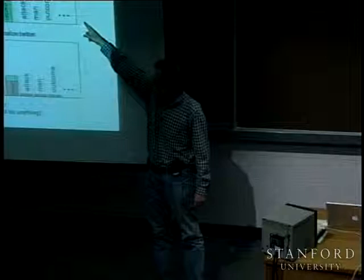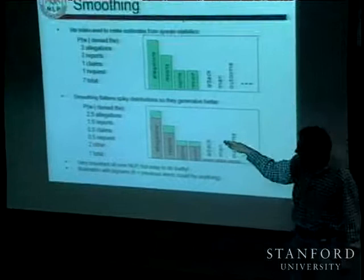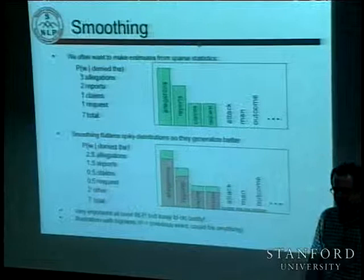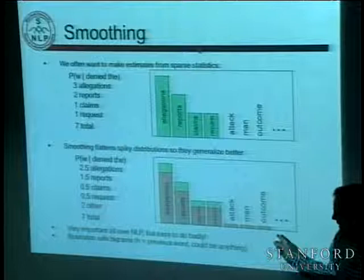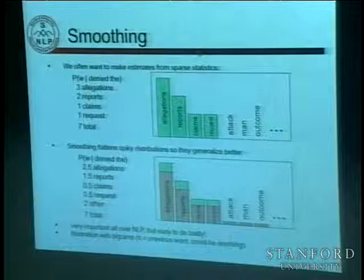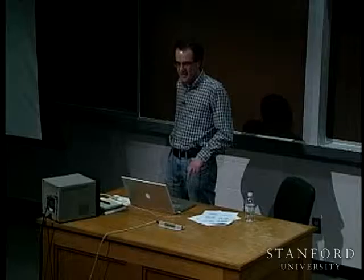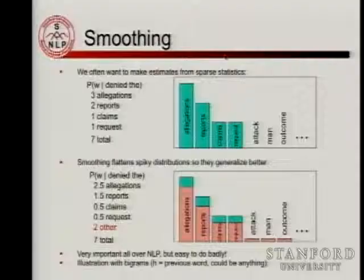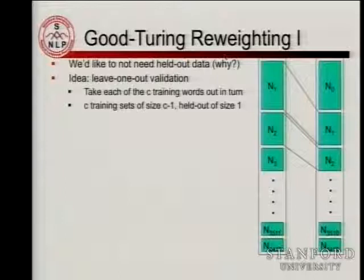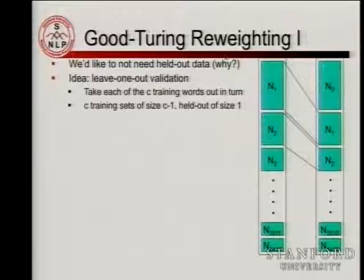So where we were last time was this problem of smoothing. We've looked through some data — we have empirical counts of how often different outcomes occurred, such as what words occurred after 'denied the.' Our idea is somehow we want to smooth — shave some probability mass off the things that did occur, which is referred to as discounting. And then we need to give that mass to the words that never appeared, because we have the idea that many of them are possible words that could appear. It's just that our data is always too sparse.